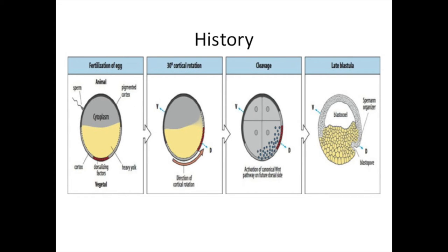Oogenesis happens before fertilization. Fertilization leads to cortical rotation. In frogs, the sperm penetrates the egg jelly and undergoes the acrosome reaction. The sperm and egg plasma membranes fuse to begin the cell cycle. A key event is the rearrangement of egg materials by cortical rotation, creating a gray crescent opposite the point of sperm entry and specifying the dorsal-ventral axis.